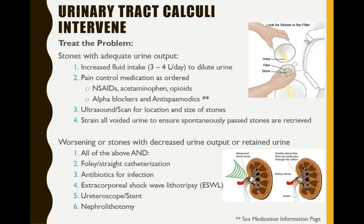If urine output decreases, it's time for intervention. Decreased urine output means the kidney is either not producing urine or it's producing urine that can't get down into the bladder — meaning there's an obstruction. Either way, we have damage or are going to have damage to the kidney, so we need intervention sooner rather than later. The patient will get a Foley or straight cath to see if they can bypass any obstruction. This only works if the stone is in the urethra; if the stone is higher up in the ureter, catheterization won't bypass the obstruction, but a Foley is still placed for strict I's and O's. Antibiotics are started because obstruction causing decreased urine output puts the patient at very high risk for kidney infection.